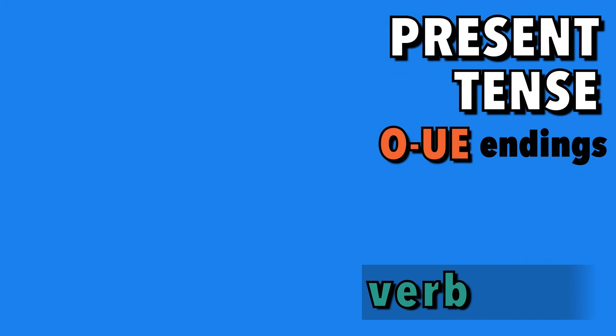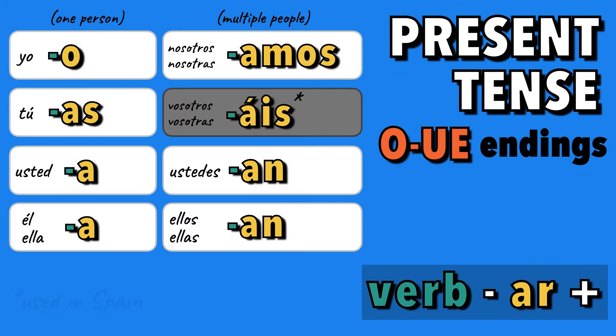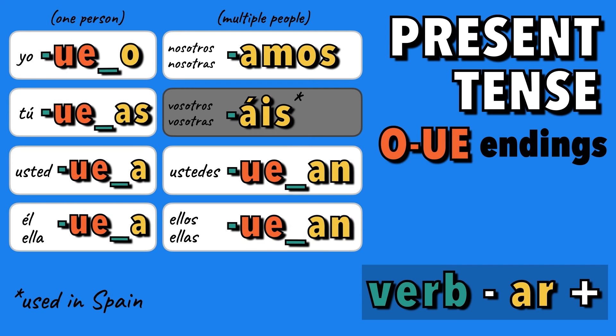For AR verbs, we'll take the verb, remove the AR on the end, and add the following endings. We'll also notice an additional change in the O on the second to last syllable. Notice it's in the form of a shoe or a boot, which is why you might hear stem-changers referred to as shoe verbs or boot verbs.